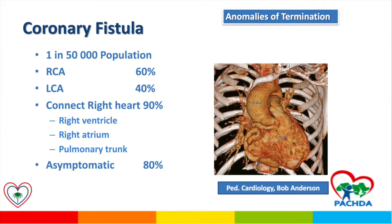Another important abnormality is anomalies of termination, and we can see coronary artery fistulas with this classification. It is estimated at about 1 in 50,000 population. The right coronary artery is more commonly involved than the left. Fistulas usually connect to the right heart structures — the right ventricle or right atrium — and to a lesser extent to the pulmonary trunk. About 80% of these patients are asymptomatic. This imaging shows right coronary artery dilatation and a fistula terminating into the right ventricle.